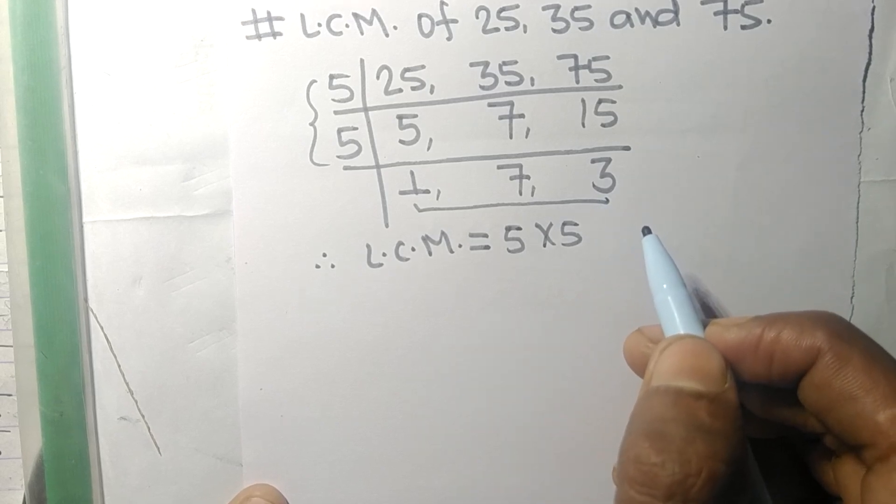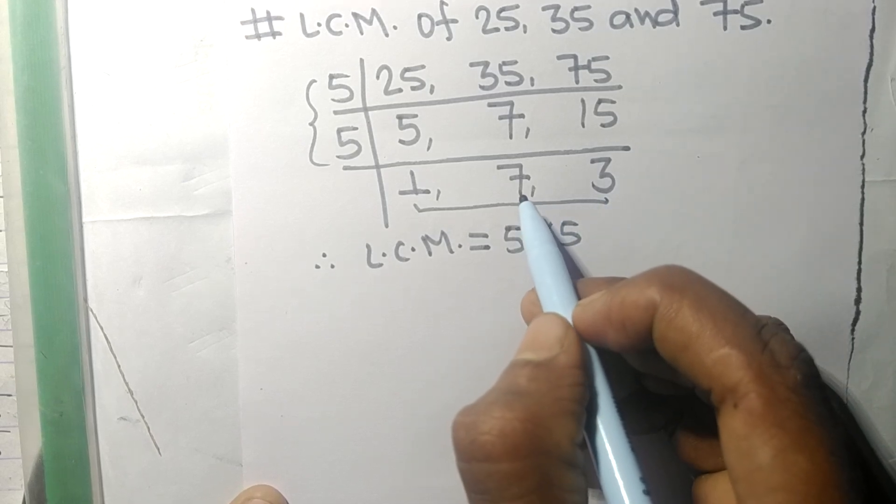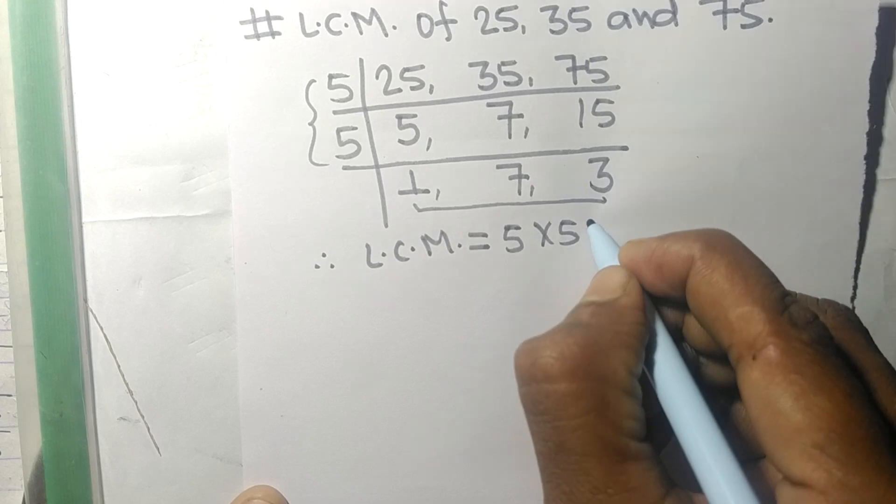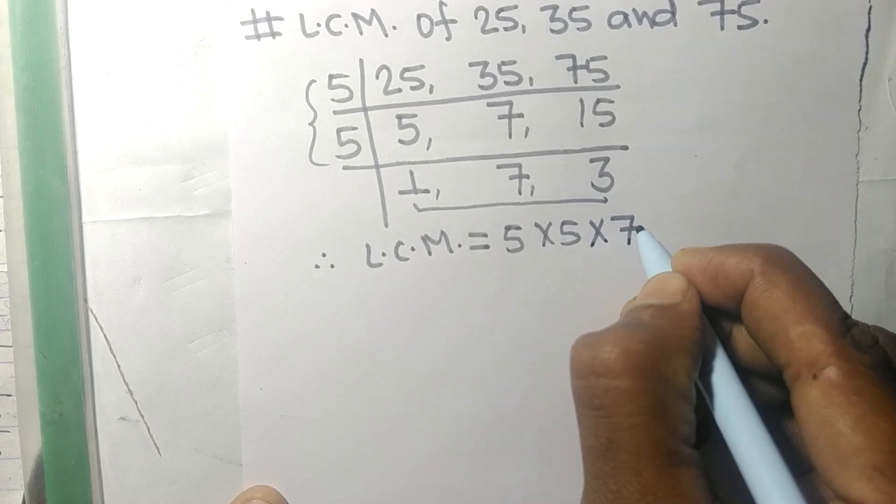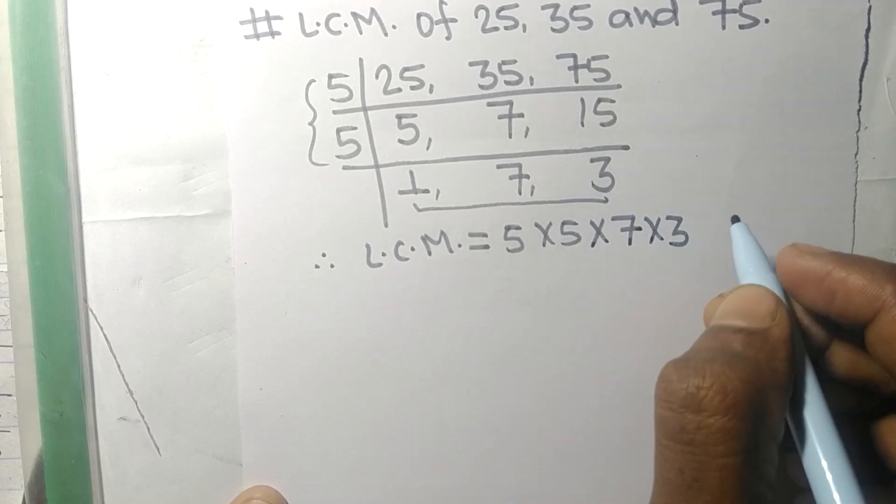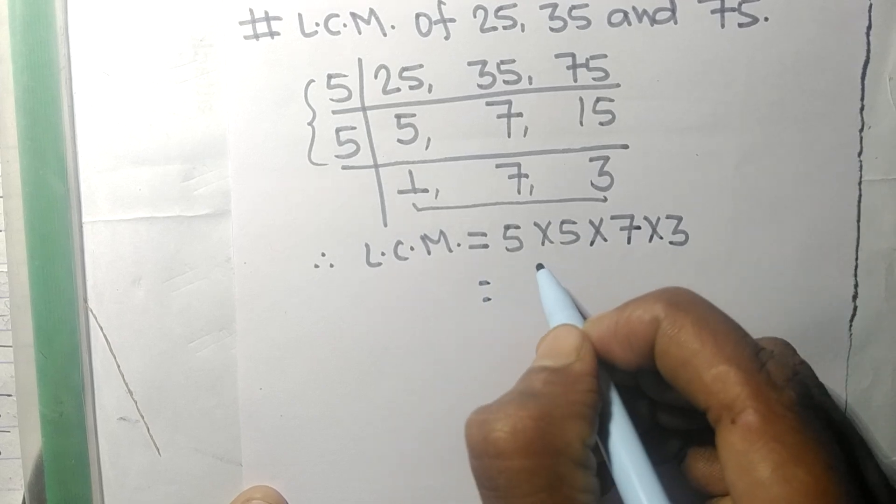That is 7 and 3, so we multiply by 7 and 3. By multiplying all these numbers we get 525.